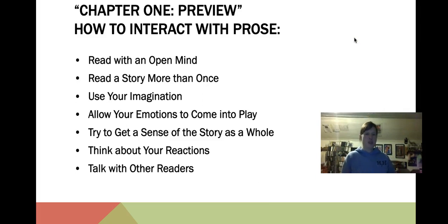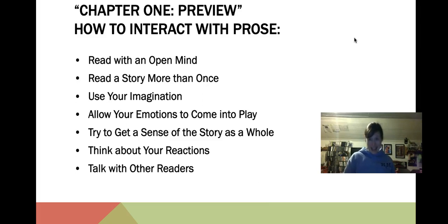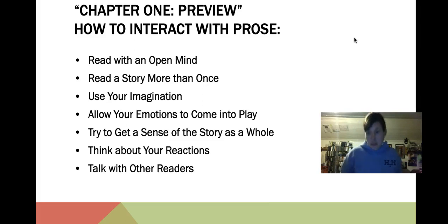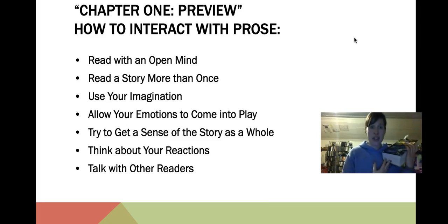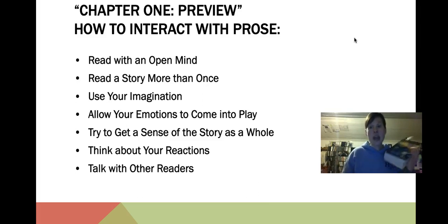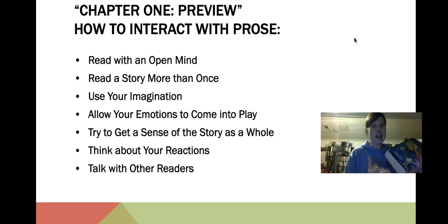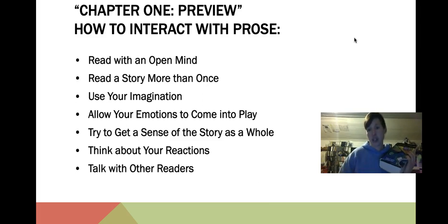Chapter one deals with the preview of prose and how to interact with it. When chapter one starts, it actually starts on page 26, talking about how we need to interact with prose. The main thing is keep an open mind. There's going to be a lot of things that you read that may be outside of your comfort zone, and the best thing to do is go in with a blank slate and let your opinions form as you read. As we go through this textbook, you'll notice that most of it is example stories — the key concepts are at the very beginning and throughout the chapters, but the majority of the text is just example stories to back up what we learn.